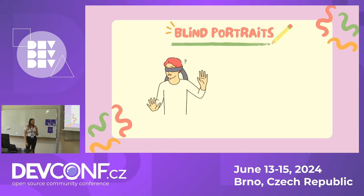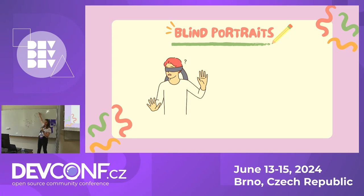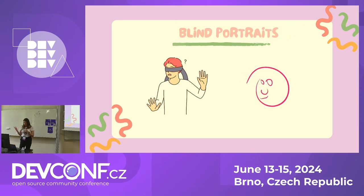You can also draw when you cannot see anything — this activity is called Blind Portrait. You look somewhere other than your paper or just close your eyes. I'll show you: I'll draw a face — this should be a head, I'll try to do eyes, pupils, hair, and now I have to do the mouth. Why are you laughing at me? It looks perfect. That's how you can have fun painting without seeing anything.